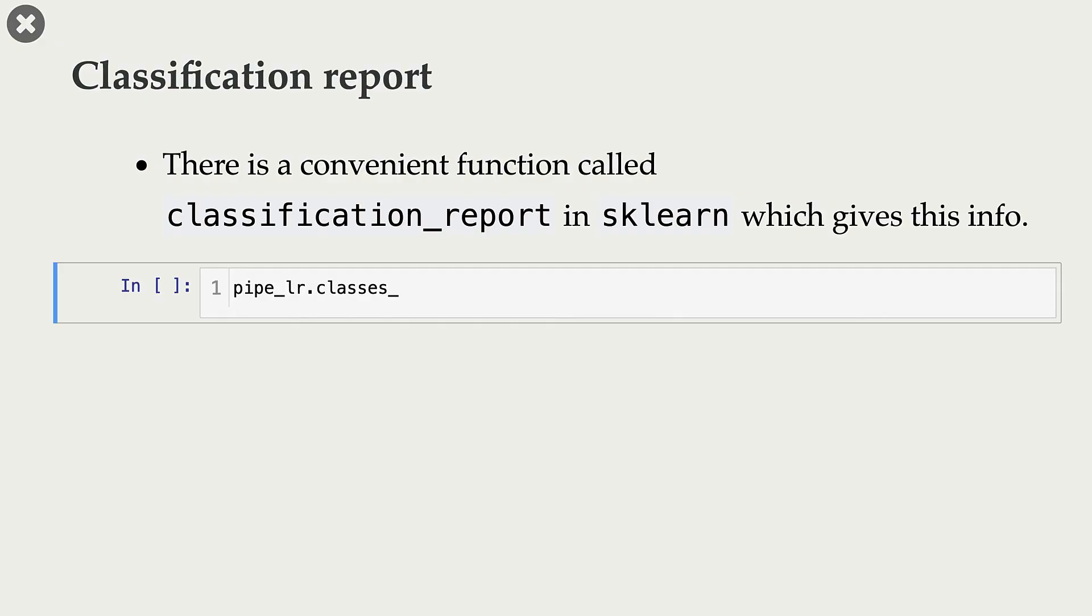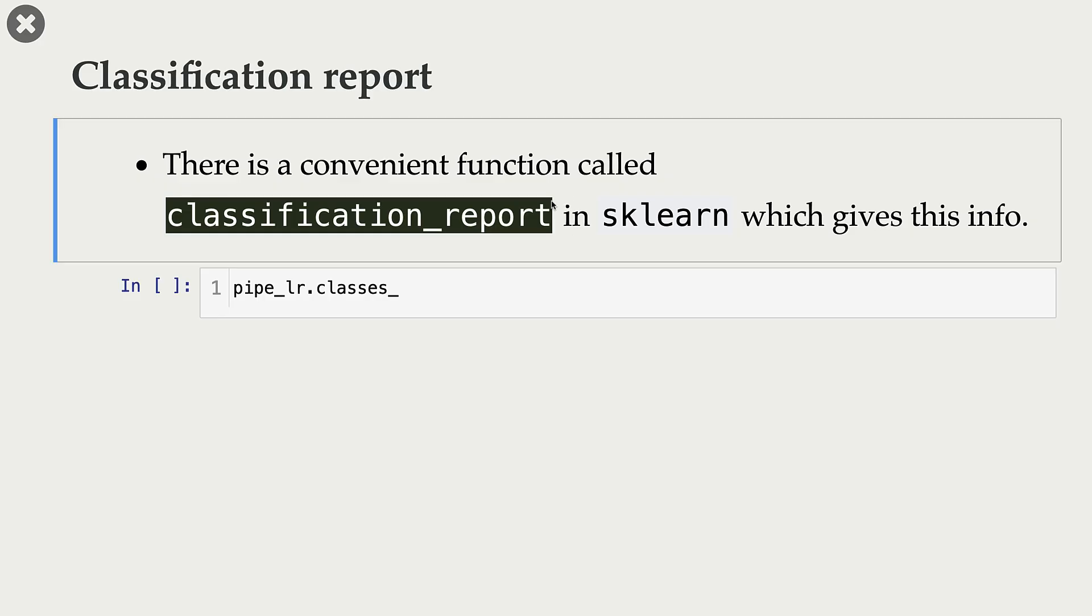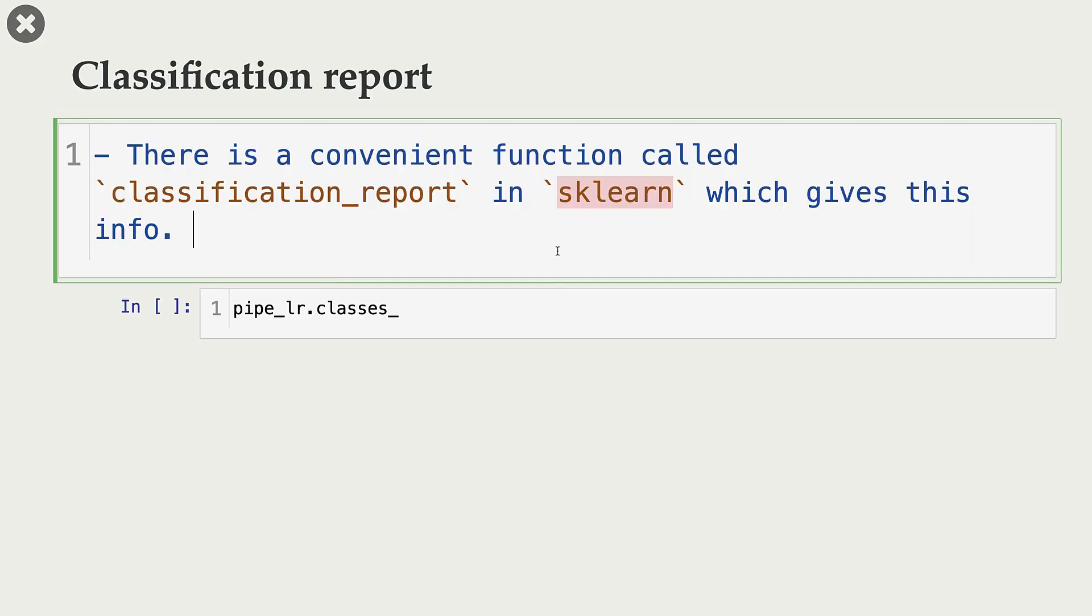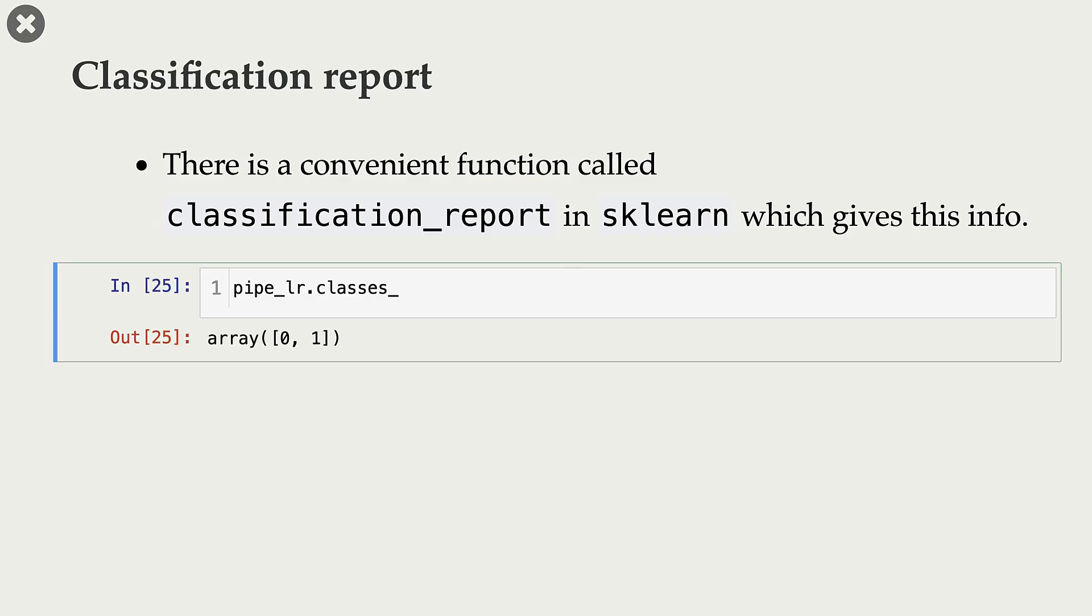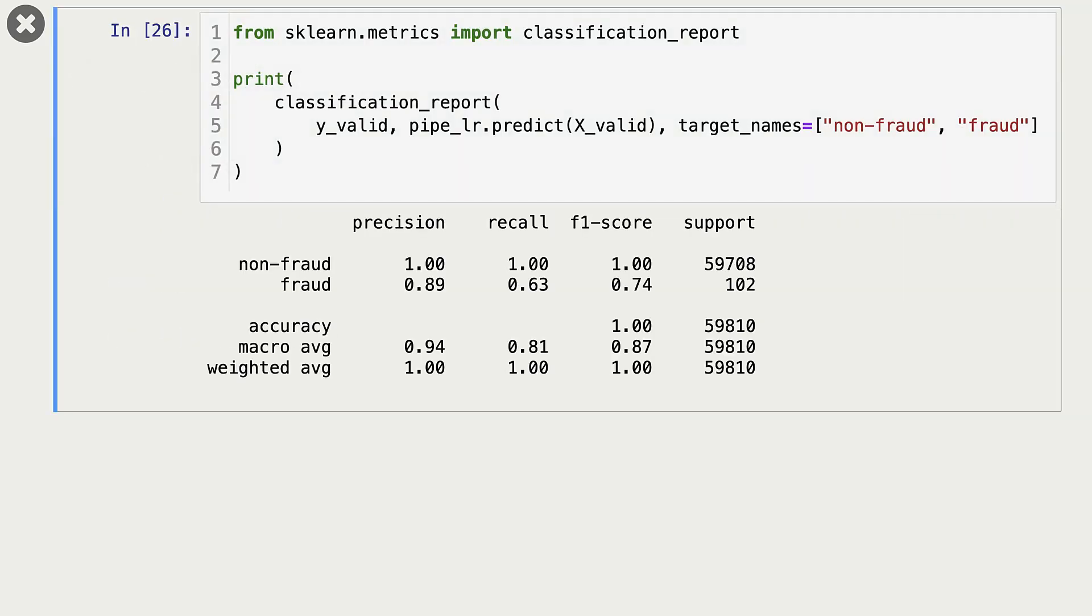Scikit-learn provides this convenient function called classification_report, which gives us all information about precision, recall, and F1 score. So these are our classes, 0 and 1. I'm giving them names. For 0, I'm calling it non-fraud. And for 1, I'm calling it fraud. And here is precision, recall, and F1 score for fraud as well as non-fraud.